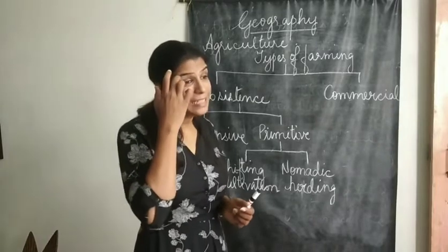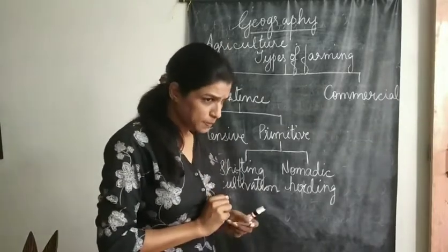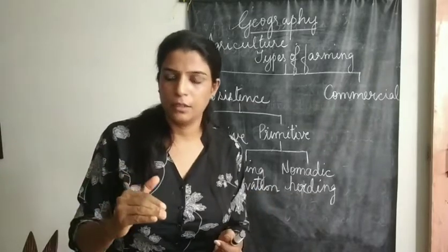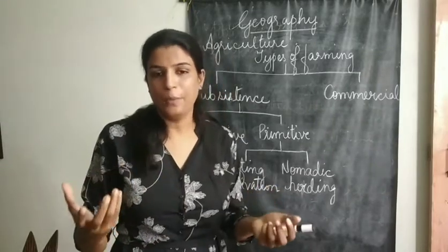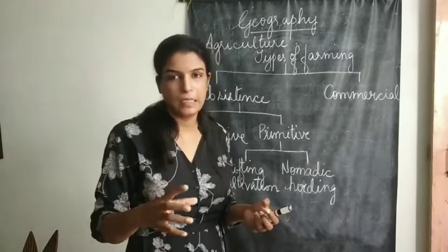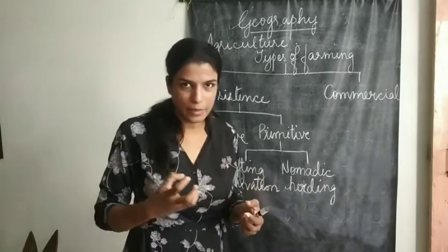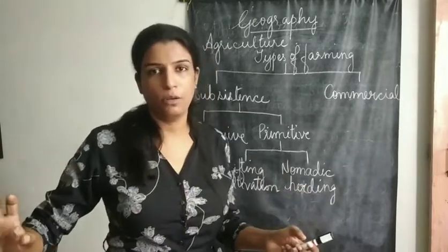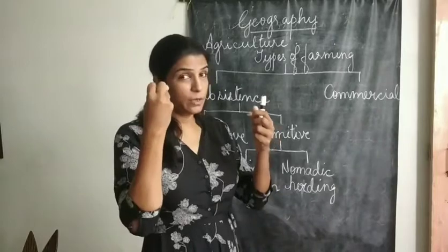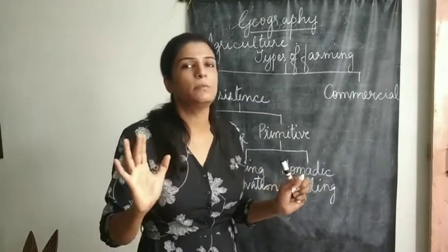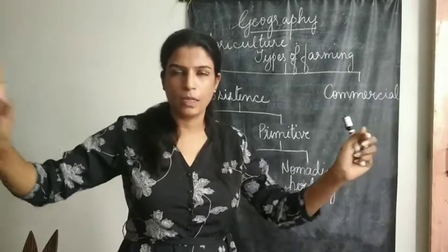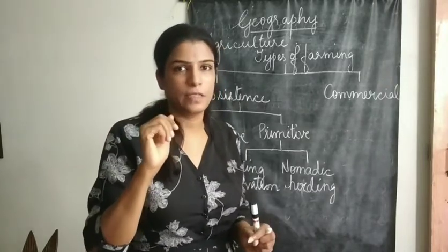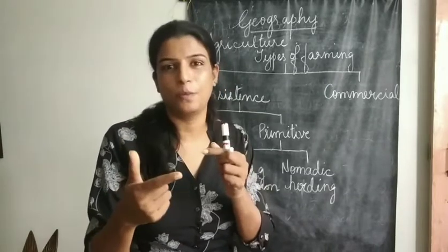In intensive subsistence farming, the plot is small and fewer people are needed to work there. The work is handled within the family. The irrigation method is age-old; they do not use any modern technology. Manual labour is involved and the tools are simple. However, the climate is very favourable and the soil is also fertile.